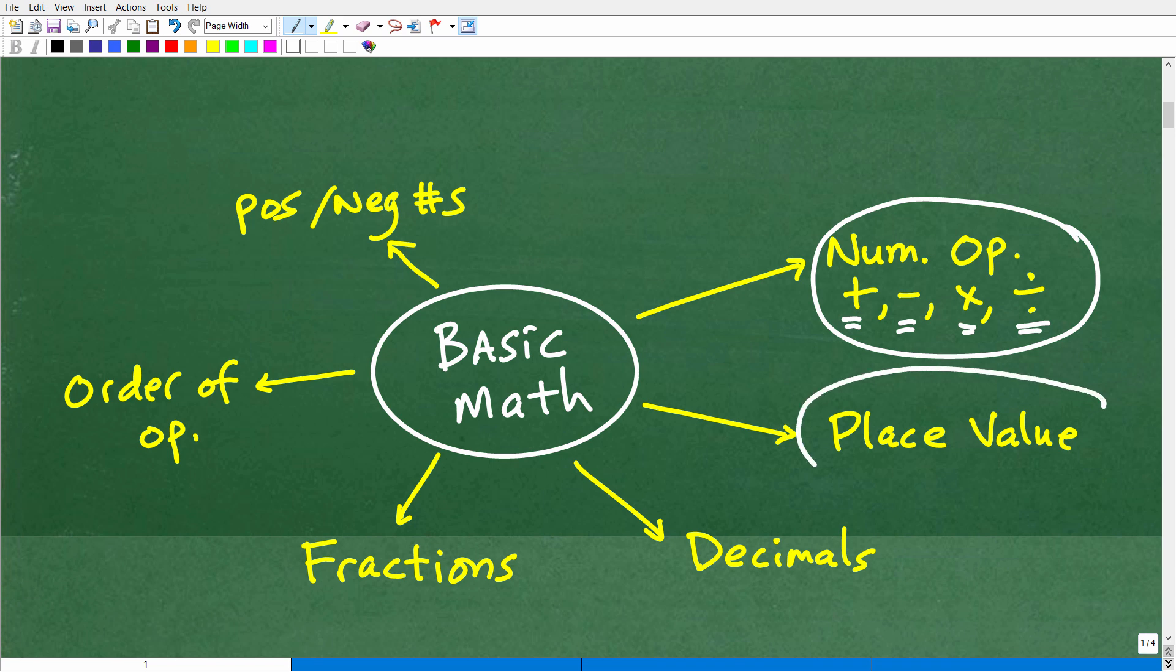Okay, so the next thing I would say is place value. So, if I look at a decimal, 21.3, we're talking about the tenths place and understanding decimals and place value. This is very important. When you see a decimal, you understand what place value that represents. And that leads us into decimals.